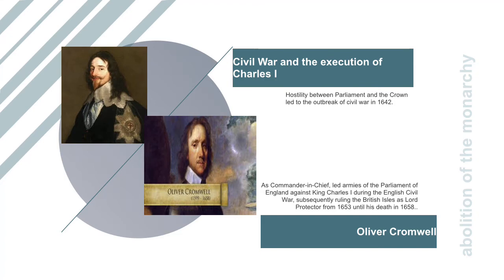He would only reassemble Parliament to raise funds when he ran out of money because of expensive foreign wars. Both his father, James I, and Charles himself believed in the divine right of kings, meaning that as king they were above the law and had been chosen by God. Charles even attempted to arrest members of Parliament, but victory of the Parliamentary army in 1649 abolished the monarchy until 1660. England became a republic and Oliver Cromwell ruled the country as Lord Protector.